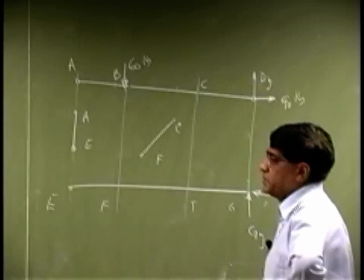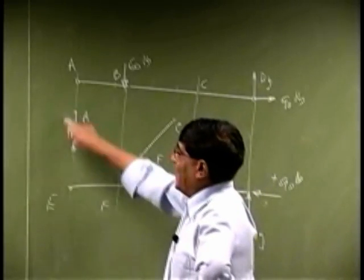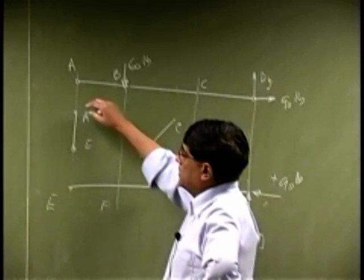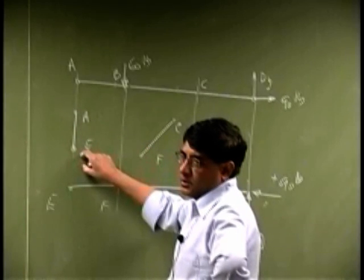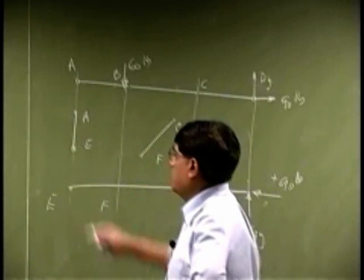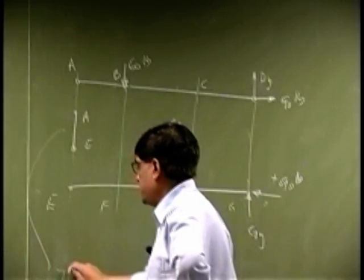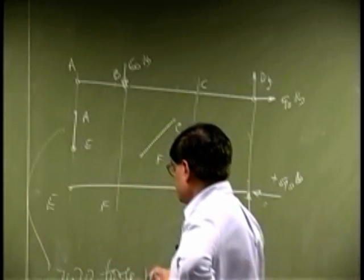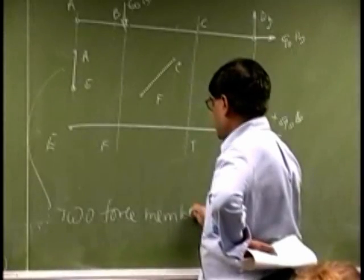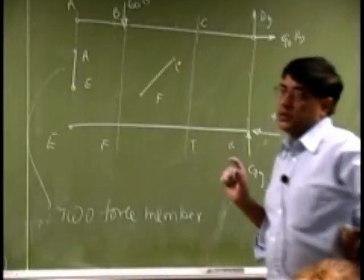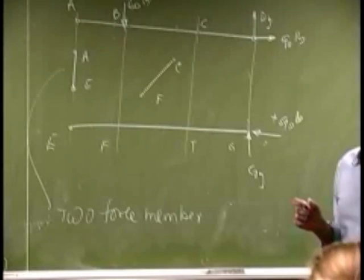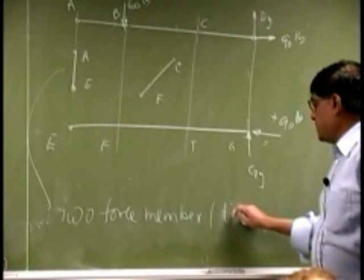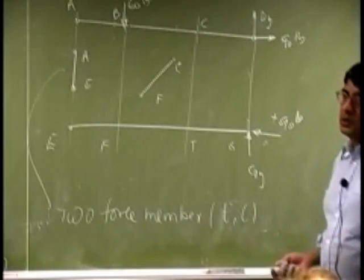The first thing you notice is on A-E that there is no force in between A-E, but A is a pin and E is a pin. So this is going to act like a two-force member. That means there is a force at two points on the system and therefore this is going to be either tension or compression.